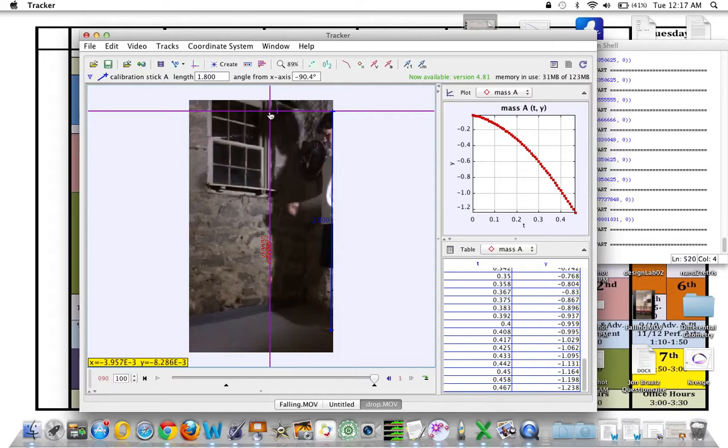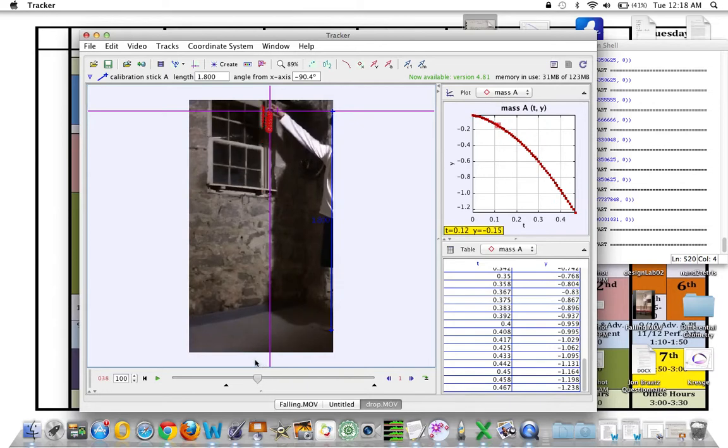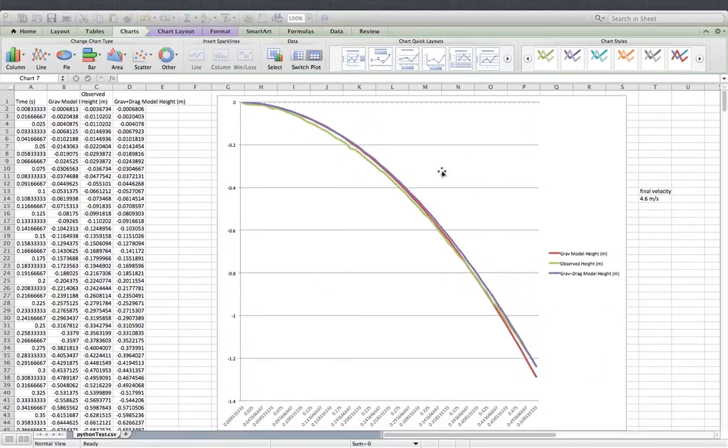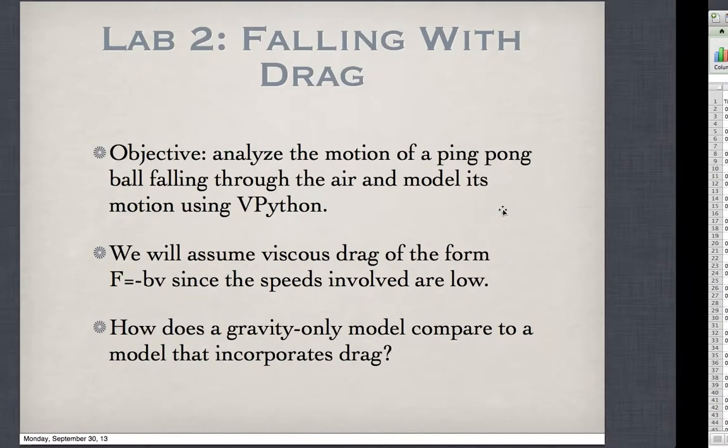I chose my origin to be the point where the ping-pong ball was as I dropped it. I measured length based off my known height of 1.8 meters. It fell, I tracked its motion, copied and pasted the data into a spreadsheet, and graphed it. I found its final velocity to be 4.6 meters per second.